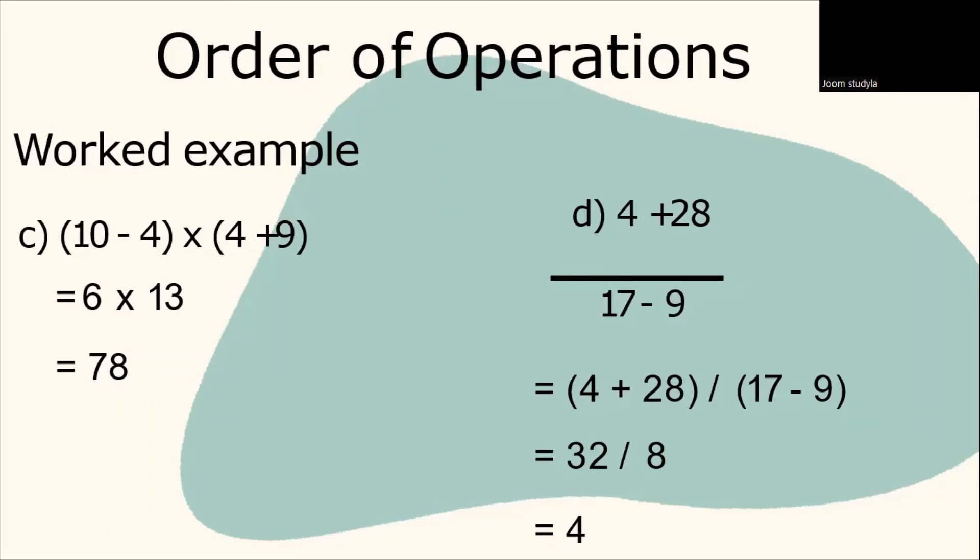The final example is, you are not being given the brackets. So, how are you going to solve this complicated problem? 4 plus 28 divided by 17 minus 9. What you have to do is reorganize it: (4 plus 28) divided by (17 minus 9). So, 4 plus 28 is equivalent to 32. 17 minus 9 is equal to 8. So, 32 divided by 8 is equivalent to 4.